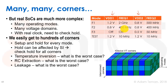We also have signal integrity, so noise may cause unexpected hold problems — we'd better run hold on our setup corners as well. Temperature inversion makes it questionable which temperature is worst case. If we want to check leakage or dynamic power, RC extraction has trade-offs: wider and higher metals increase capacitance while smaller metals increase resistance. When we check all of that, we get a multi-dimensional cube of corners — easily hundreds or more.